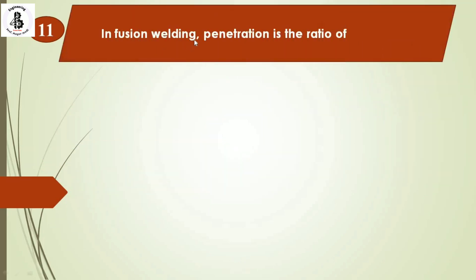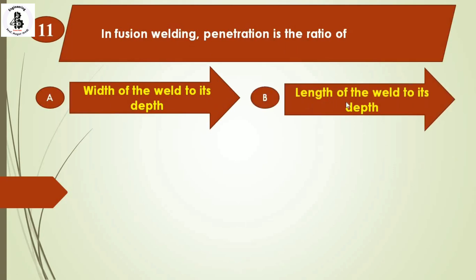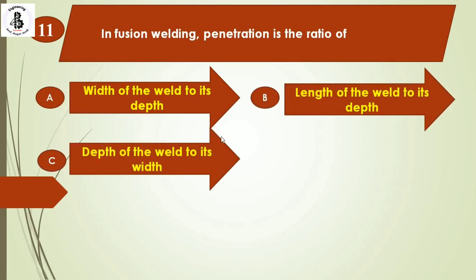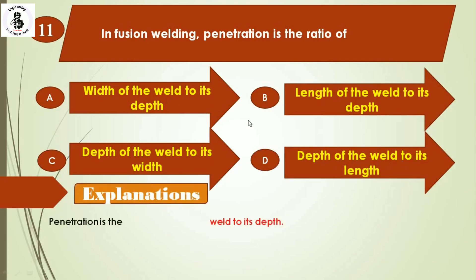The next question: in fusion welding, penetration is the ratio of — Option A: width of the weld to its depth, Option B: length of the weld to its depth, Option C: depth of the weld to its width, Option D: depth of the weld to its length. The penetration ratio is the width of the weld to its depth. The right answer is Option A.